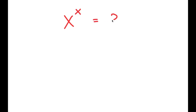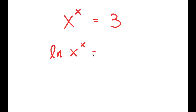In this video, I'm going to solve the equation x to the power of x is equal to 3. To solve this, I'm going to first start by taking the ln, or natural log, on both sides. So I get ln of x to the power of x is equal to ln of 3.